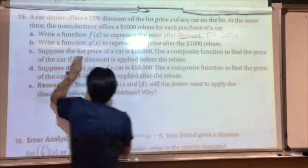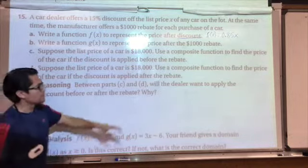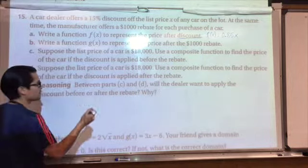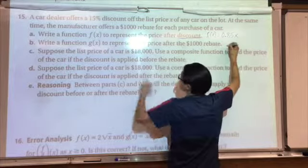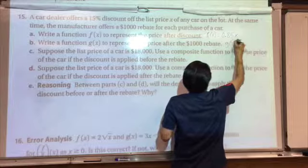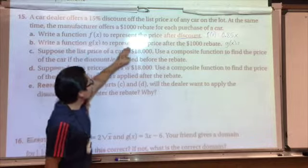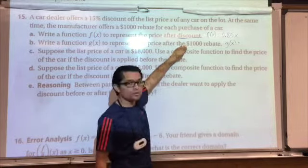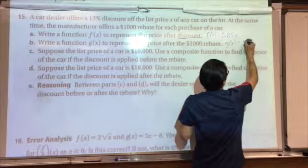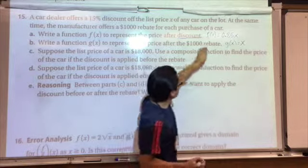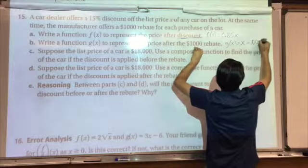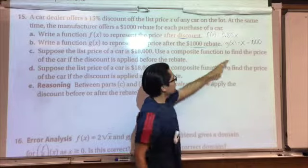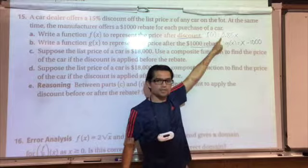Part B: write a function to represent the price after the $1,000 rebate. This is not a percentage — it's just a $1,000 set value, so it's much easier. We're going to use G to represent this one. This represents the price after the rebate only, no discount. So G of x will be x minus $1,000 because of the rebate. There are your two different functions — $1,000 rebate is G, and 15% discount is f.